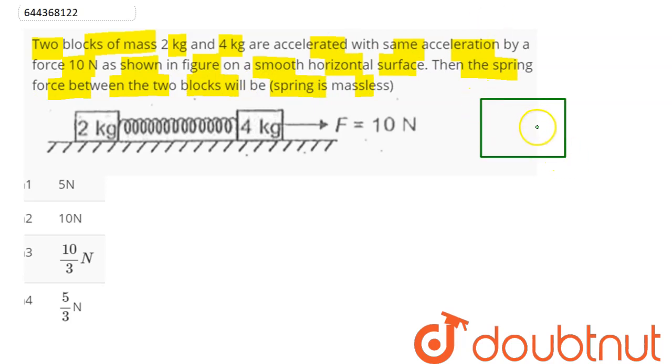If we consider these two blocks to be a system, then whole system mass is 6kg and force of 10N is acting on this system. Here surface is smooth, so no friction, hence system accelerates towards right with acceleration A. Pseudo force will act backwards with magnitude of 6A.